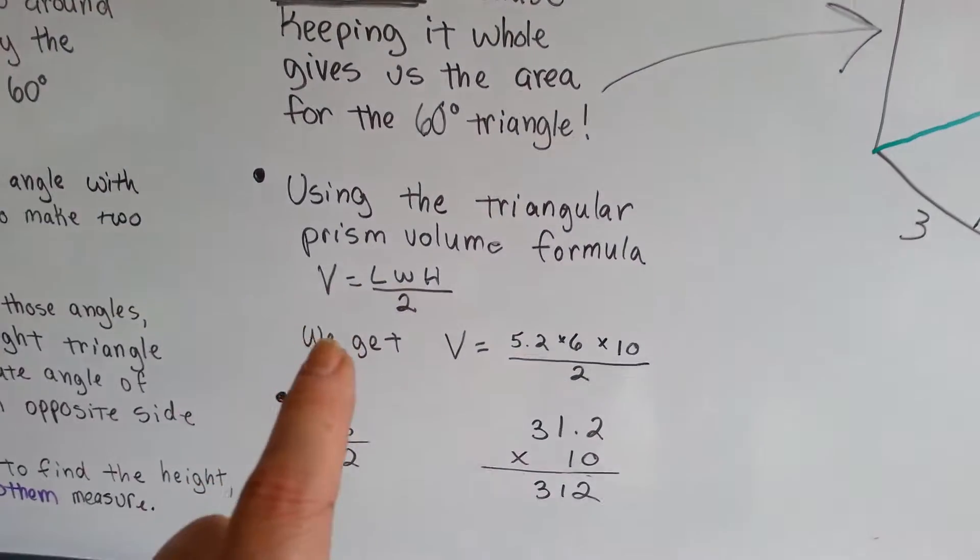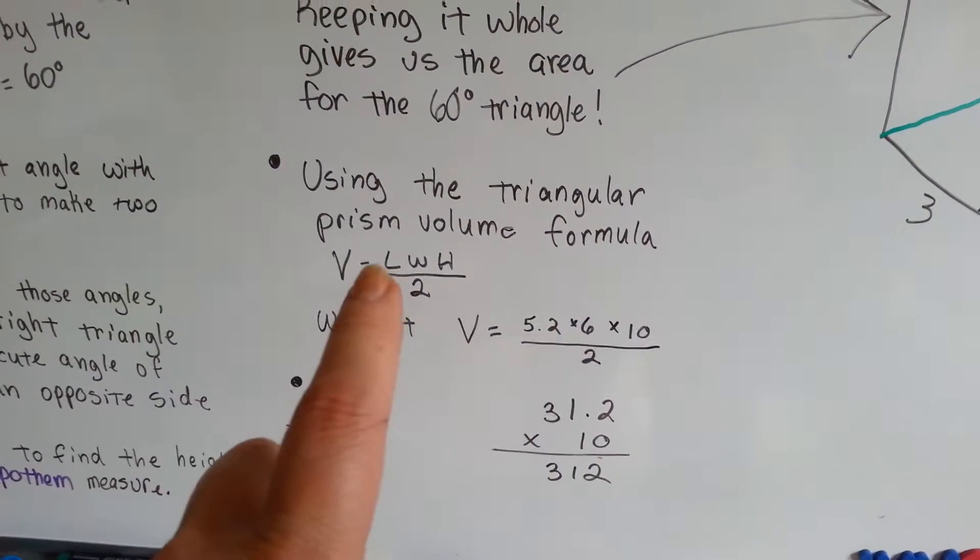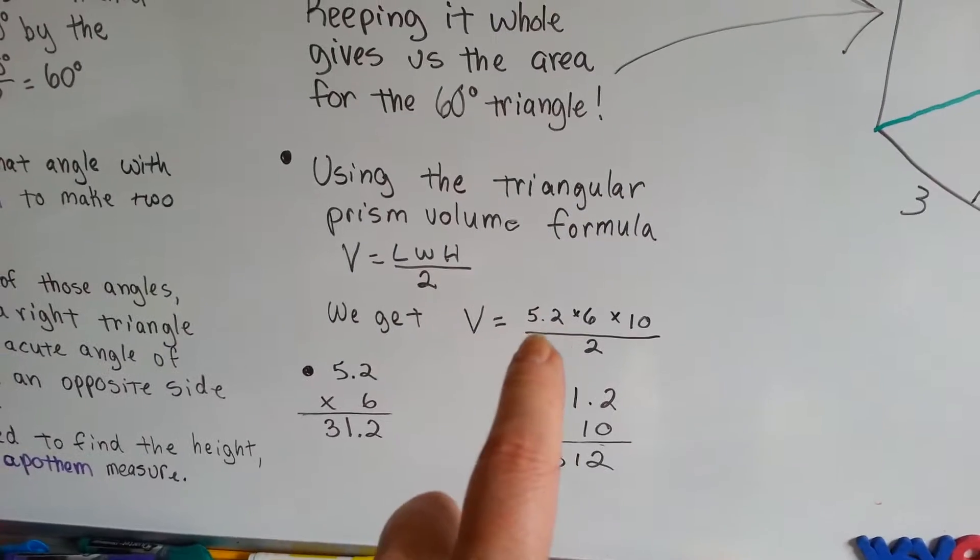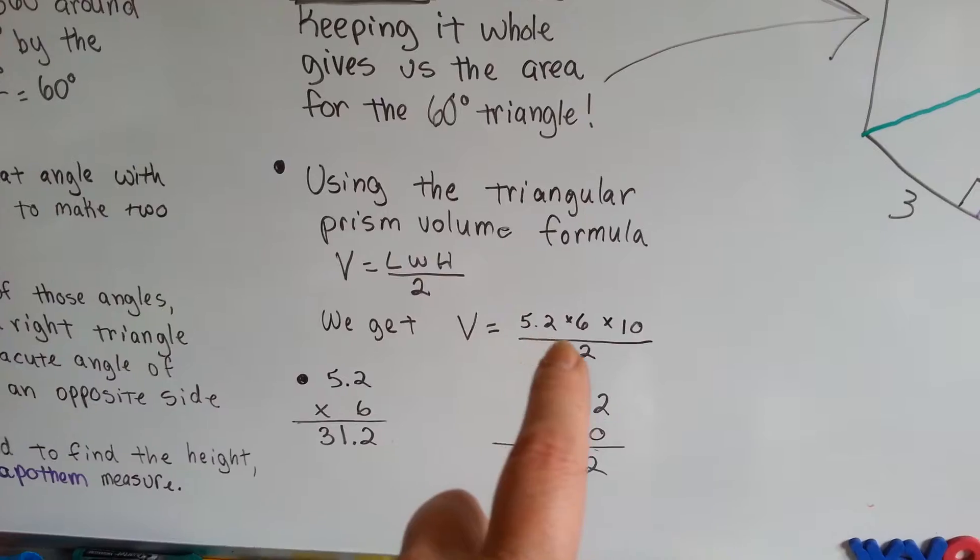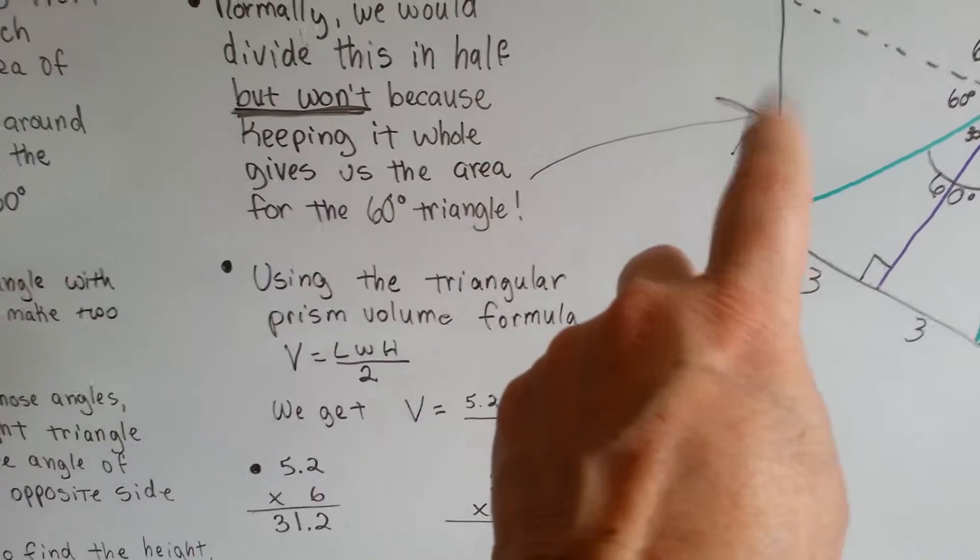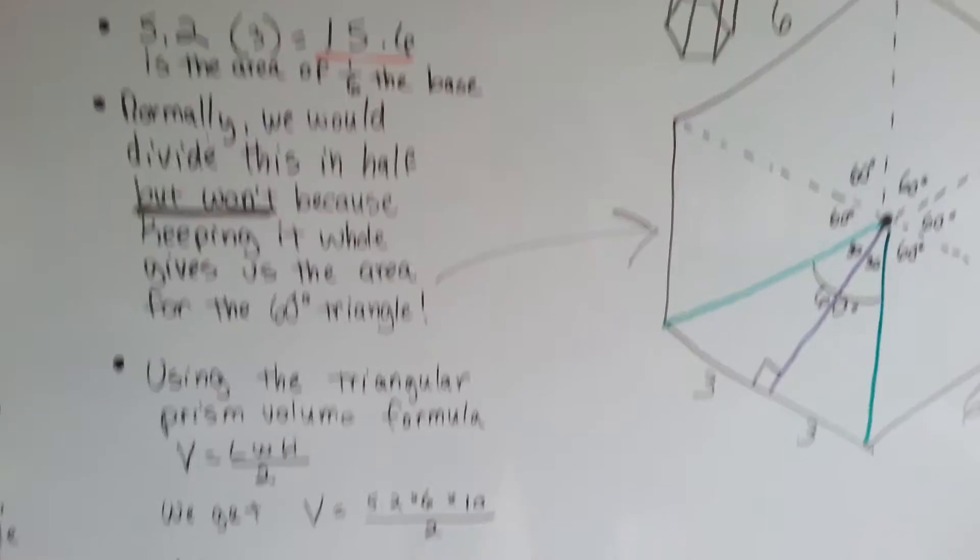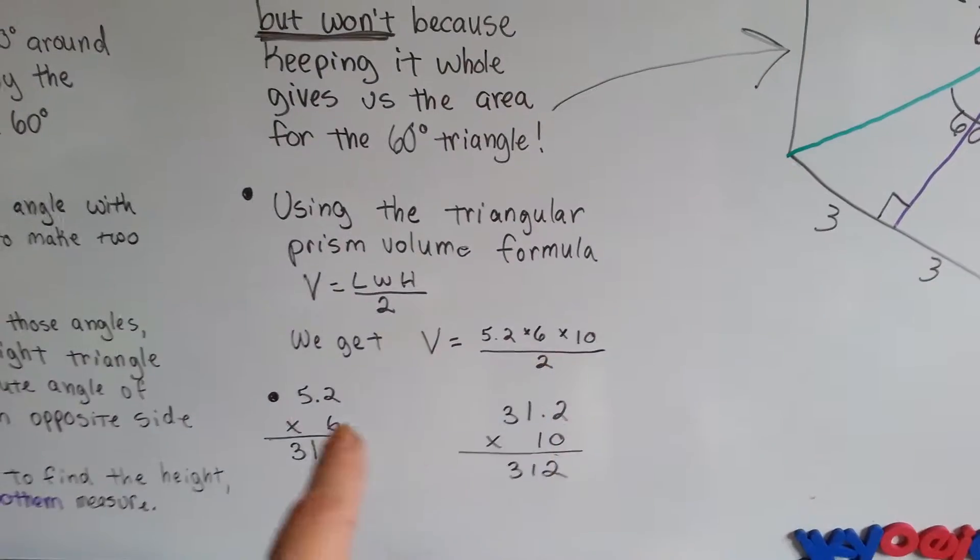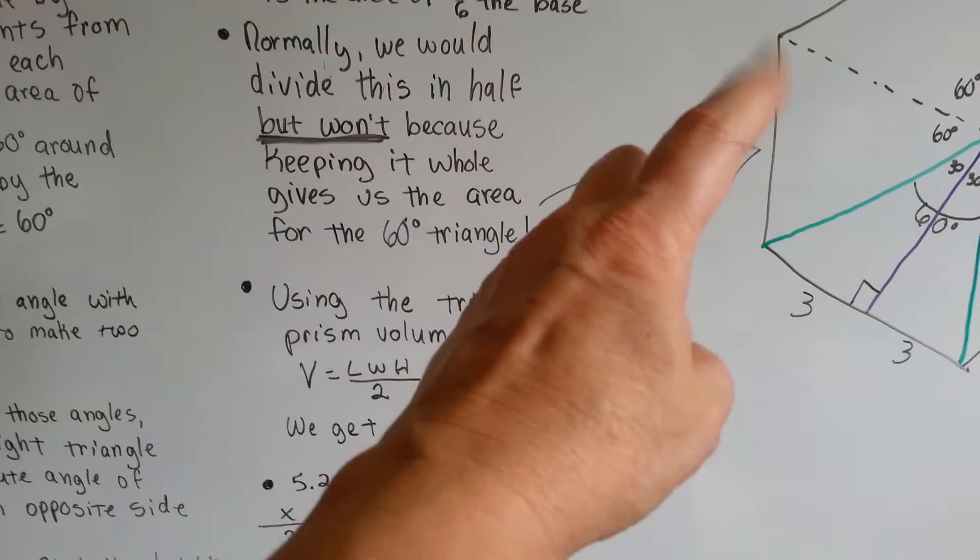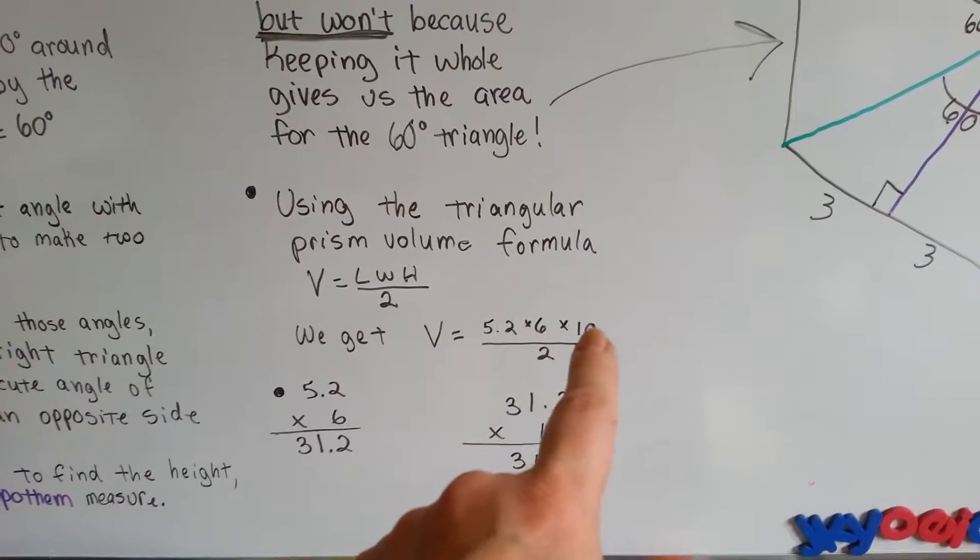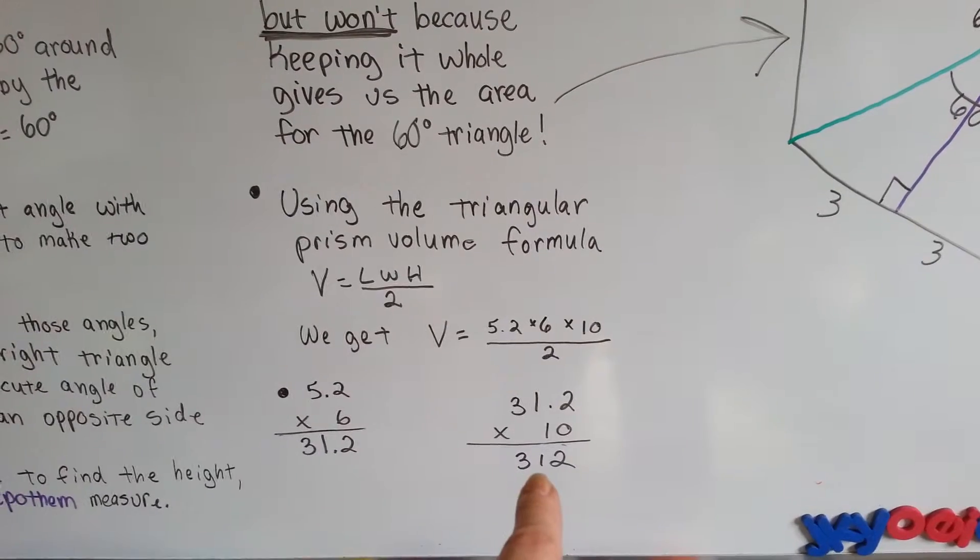Using the triangular prism volume formula of V equals length times width times height divided by 2, we get the apothem of 5.2 times the 6, which is this, times the height of 10, divided by 2. The apothem times this side length is 31.2. We multiply that by 10, and we get 312.